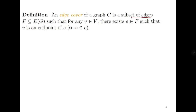We have discussed the matching number and now we are discussing the edge covering number. Both are related to the edges, such that for any vertex, there exists an edge E such that V is an endpoint of E. So we need to find a subset of the edges such that all the vertices must be incident to at least one of these edges.